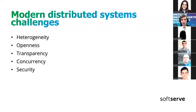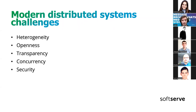Modern Distributed Systems Challenges. The first challenge is heterogeneity — the ability for components in our system to communicate with each other even if they are running on different systems, different hardware, and written in different languages. For example, components can be written in Java and C++ and still communicate with each other.